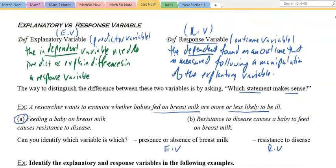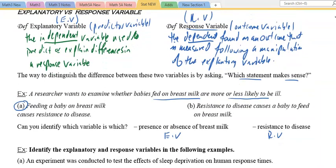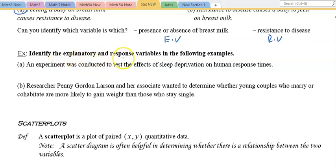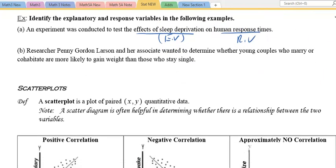Identify the explanatory and response variable in the following: An experiment was conducted to test the effect of sleep deprivation (that's the EV) on human response time (that's the outcome). Researcher Penny Gordon Larson and her associate wanted to determine whether young couples who marry or cohabitate are more likely to gain weight than those they don't. That's the EV (marriage/cohabitation), and weight gain depends on whether they get married or get together at a younger age.